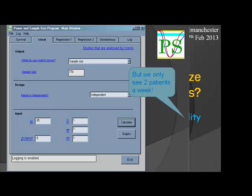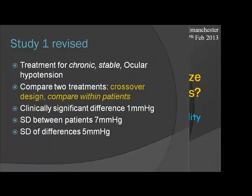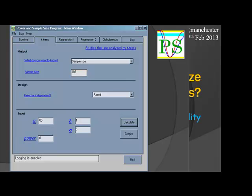But we only see two patients a week — this is the rest of your life. So he went away and came back the next week. These patients are actually stable — it's a chronic condition. So could we do a crossover study, treating patients with one drug first and then the other, comparing the same patients on the two different drugs? Same parameters, but because you're looking at differences the standard deviation is smaller, since you take out some of the individual variation — you're looking at variation within a patient rather than between patients. With paired data and a slightly smaller standard deviation, it now comes out at about 200.